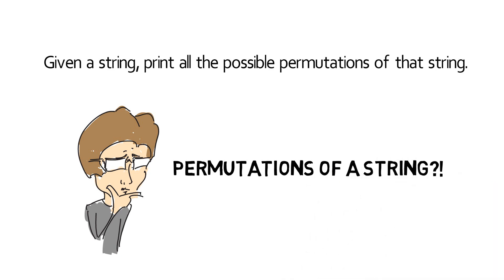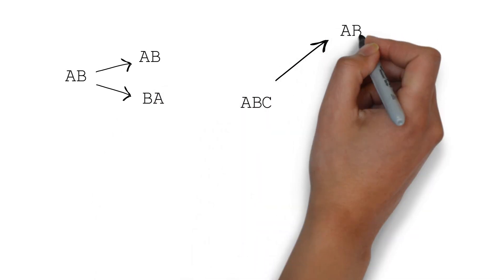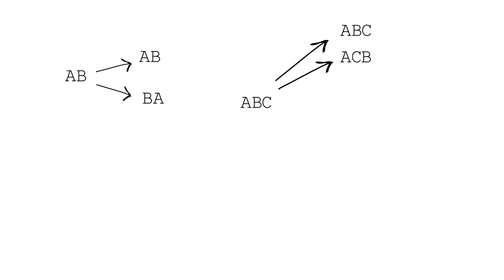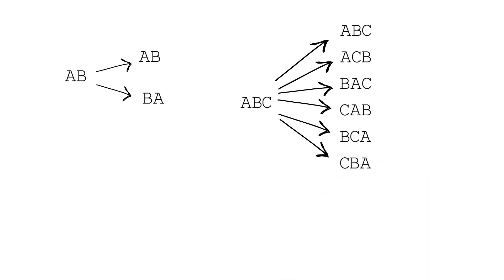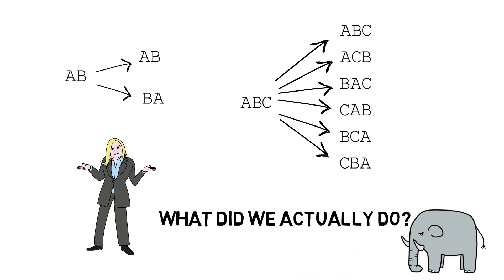Permutations of a string means generating all possible words that could be formed using the characters in the provided string. For example, if the string is AB, possible words would be AB and BA. If the string is ABC, possible combinations would be ABC, ACB, BAC, CAB, BCA and CBA. But how did we form these different combinations? In other words, what did we do to realize that these are all the string combinations of the string ABC?